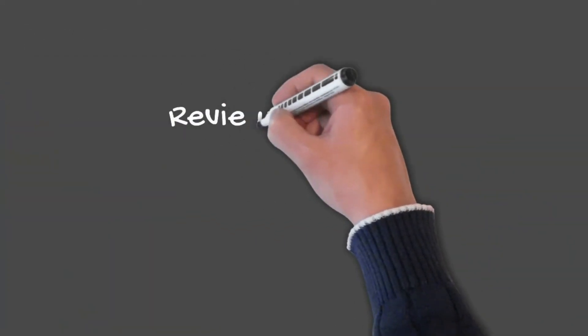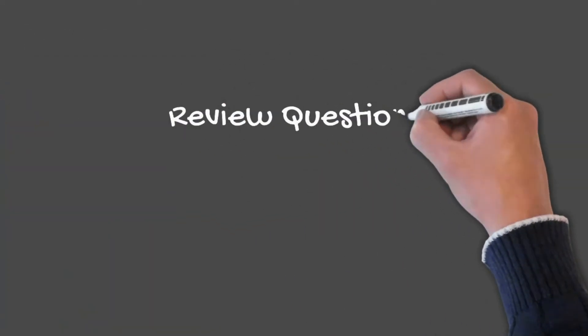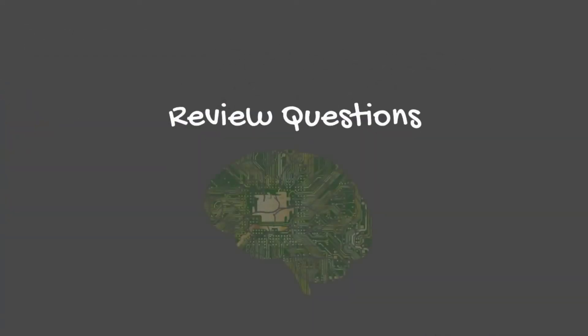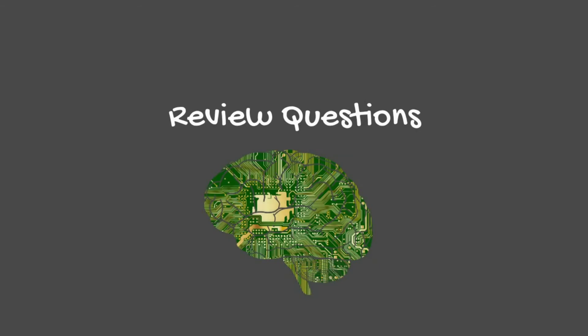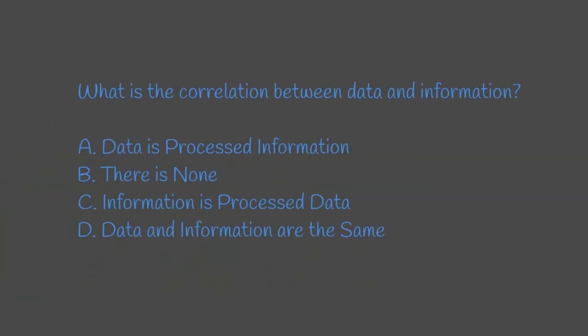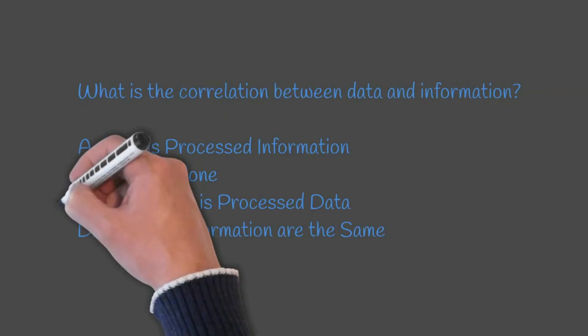We have covered quite a bit in this lesson. Let's check our learning with some review questions. Question 1: What is the correlation between data and information? The answer is C — information is processed data.